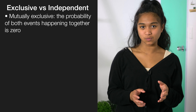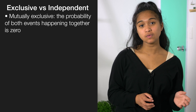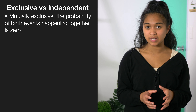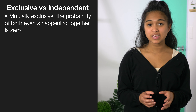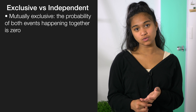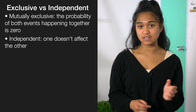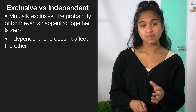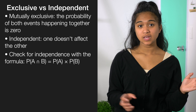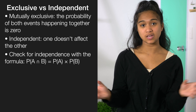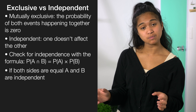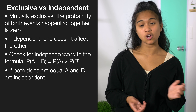There will most likely be a question asking whether two events are mutually exclusive or independent — these are different concepts that students often confuse. Being mutually exclusive is like saying 'you can't sit with us' — these events can't occur together, so the probability of both happening is zero. Being independent is like saying 'I don't care what you do' — one event doesn't affect the other. To calculate independence, use the formula, calculate both sides separately, and decide whether they're equal.